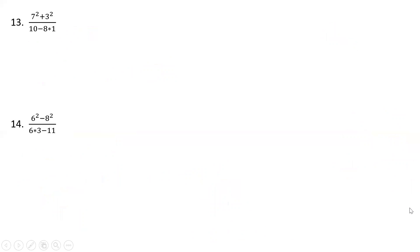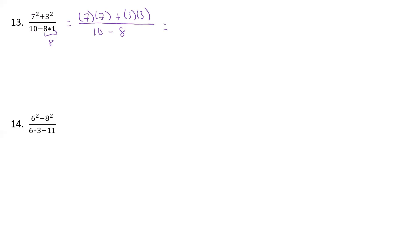What about here? We have 7 squared plus 3 squared over 10 minus 8 times 1. Let's work in the numerator first — that says we're going to take 7 times 7 plus 3 times 3, squaring the 3 and the 7. In the denominator, we take 10 minus the quantity 8 times 1, so 10 minus 8 because 8 times 1 is just 8. Now we have to multiply: 7 times 7 is 49, plus 3 times 3, that's 9. And 10 minus 8 gives us 2.